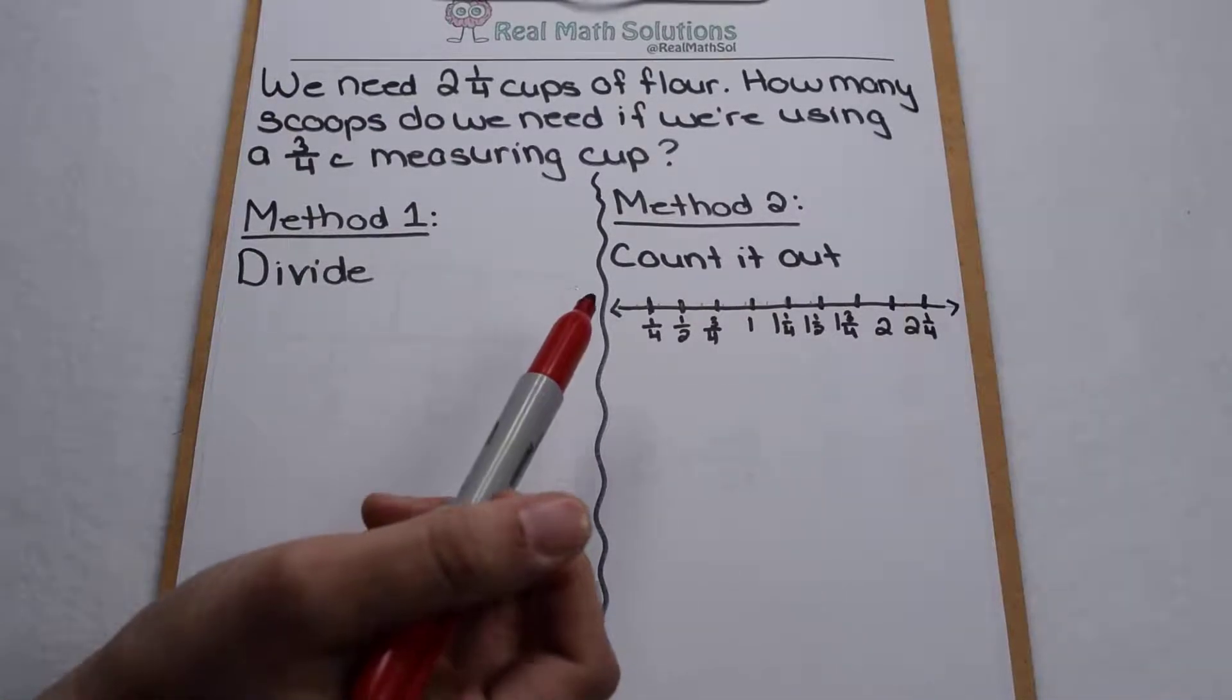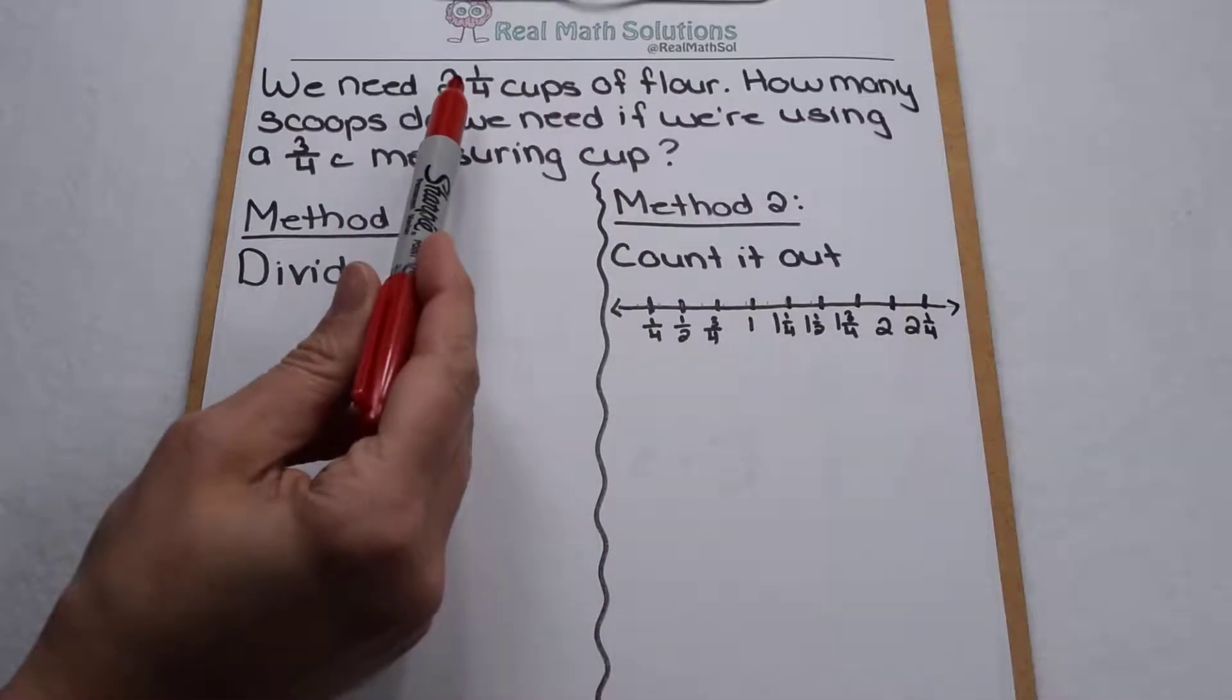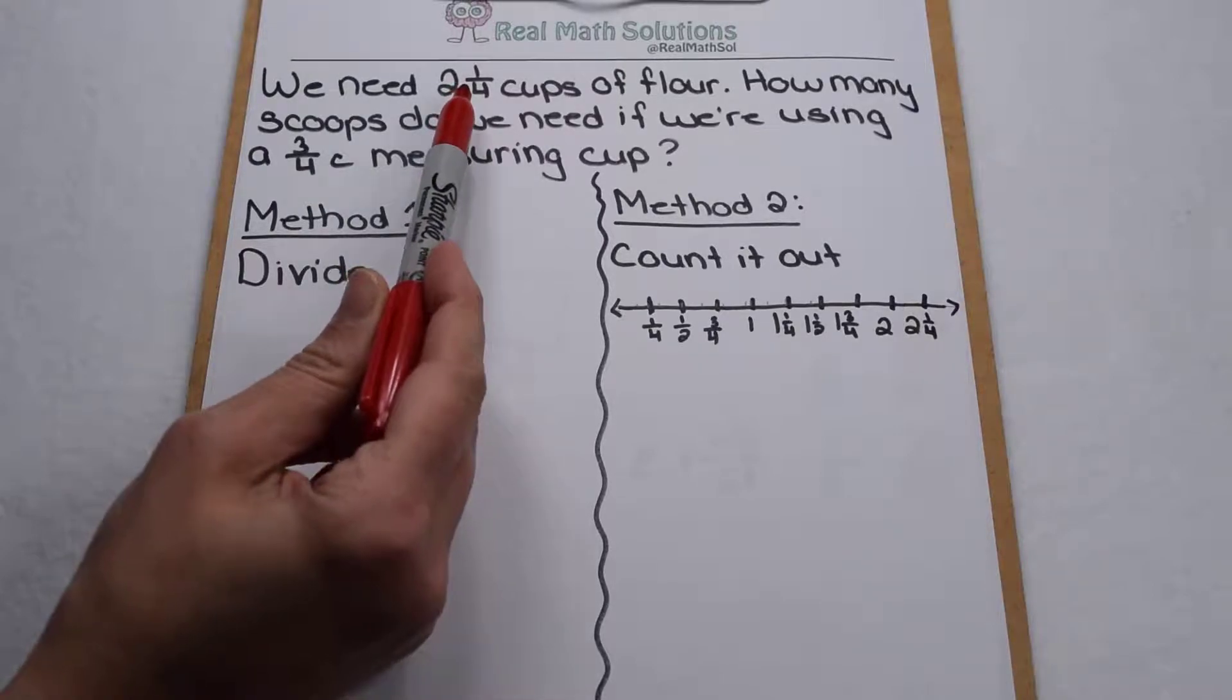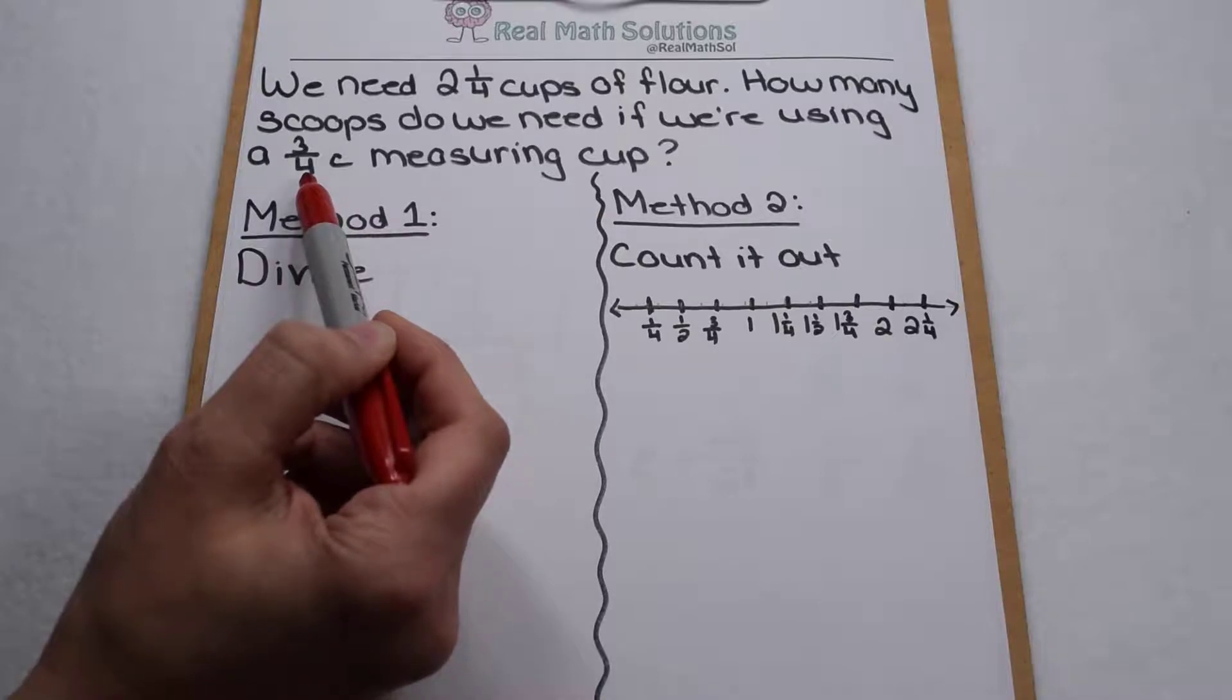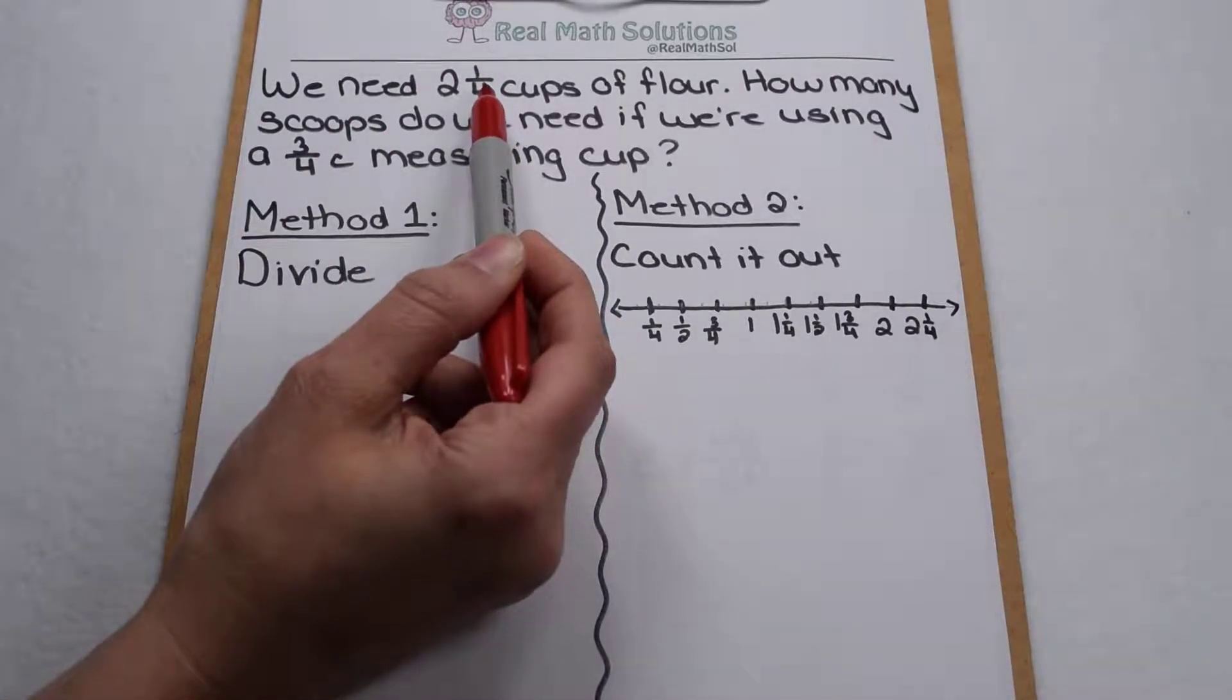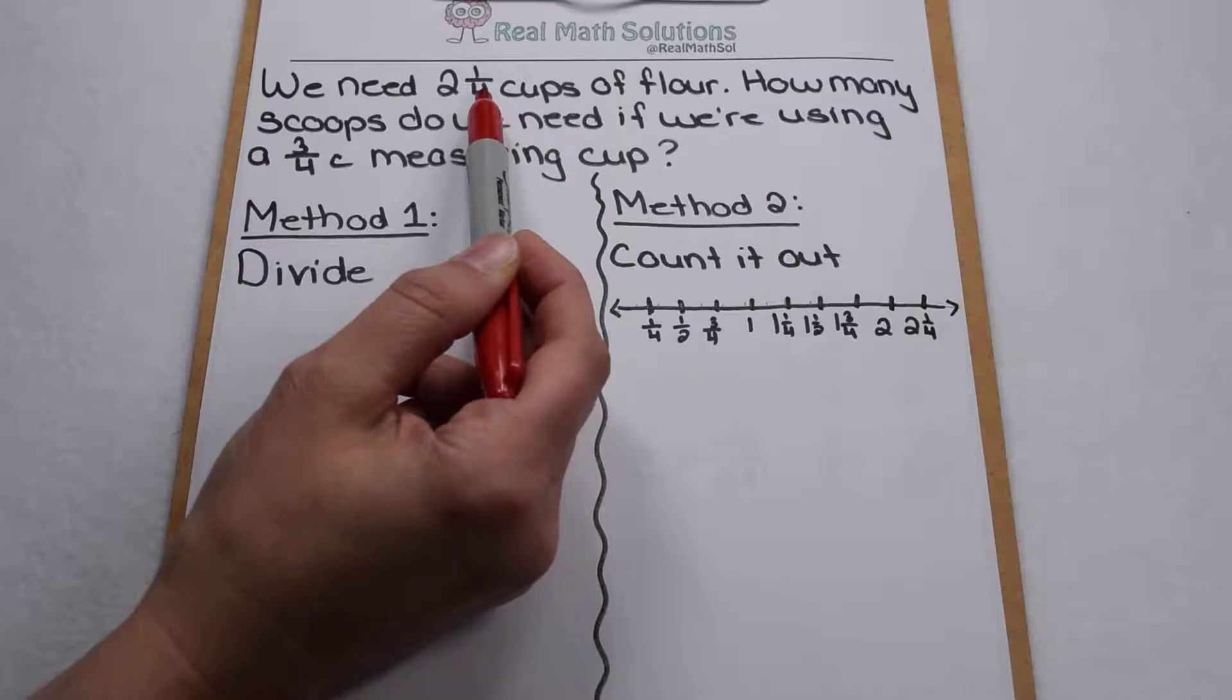This weekend I was making chocolate chip cookies. The recipe I was using needed two and a quarter cups of flour. But I really didn't want to do that many dishes and I was being kind of lazy, so the only measuring cup I had out was a three quarter cup measuring cup. So what I need to know is how many scoops of my three quarters cup measuring cup am I going to need in order to get exactly two and a quarter cups of flour.